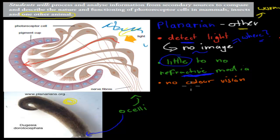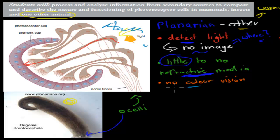And it also has no color vision, which kind of makes sense. Think about it — if you close your eyes and someone switches on the light, do you all of a sudden see different types of colors from all over the place? Probably not. You just see light being on or light being off. You wouldn't know what colors they are. And that's also how a planarian sees the world.